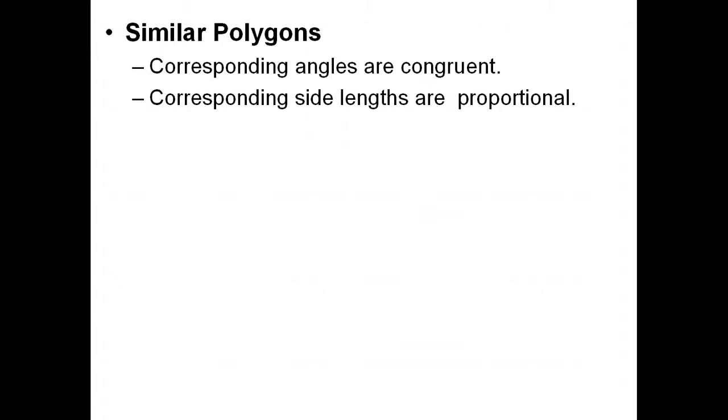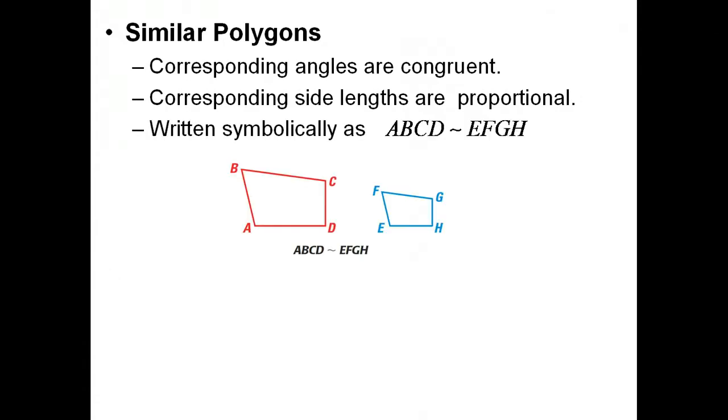What we're really talking about is two figures that look exactly alike, except one is larger or smaller than the other. Written symbolically, we would say that this quadrilateral ABCD is similar to quadrilateral EFGH, and the little tilde sign works as our symbol for similarity. It's sort of like the congruent sign only without the equal sign, since our sides are not equal in length.